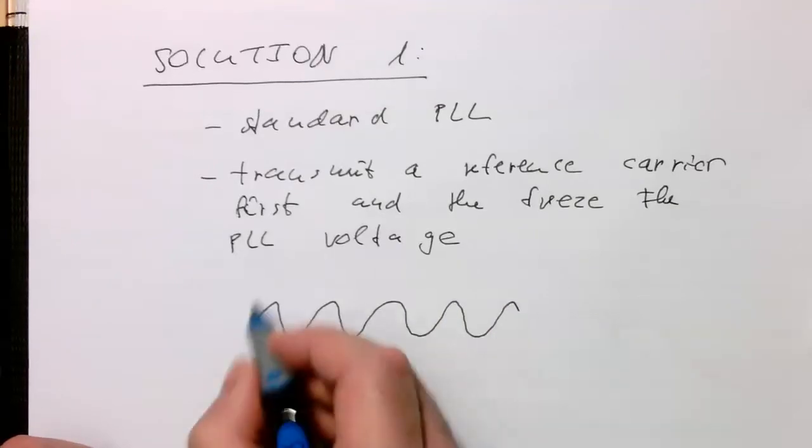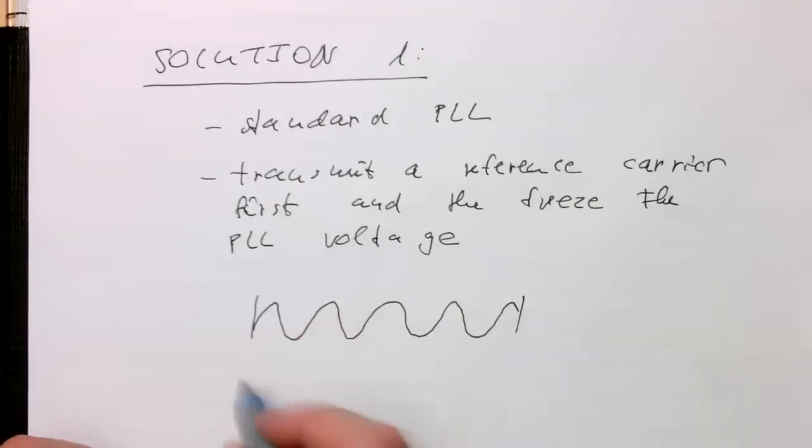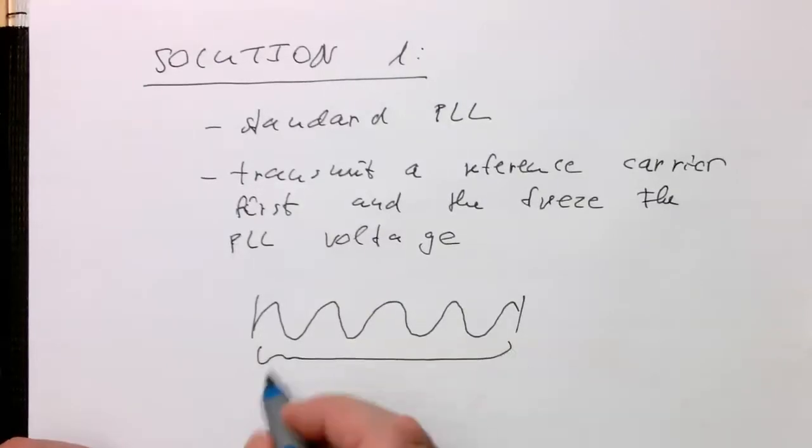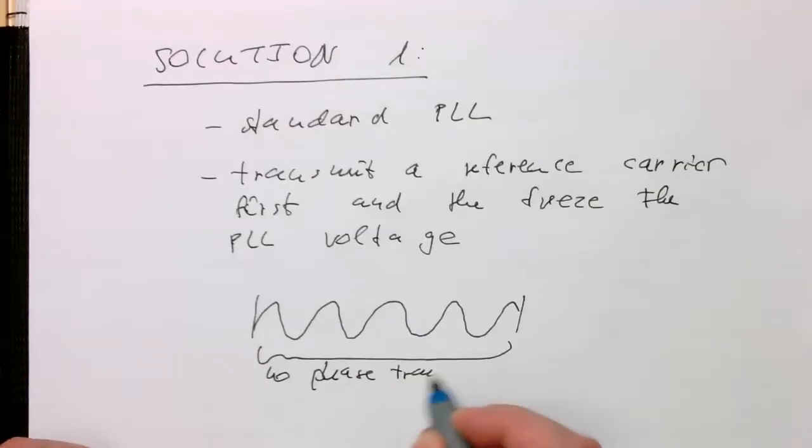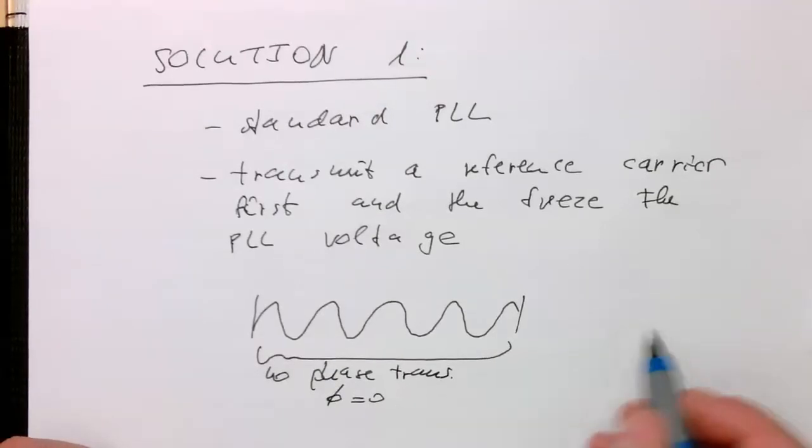First we have a clean carrier wave without any phase changes. There are no phase transitions, and the phase is constant. For example, the phase is zero or 180, it doesn't matter as long as the phase is known, and then in this period the PLL locks.